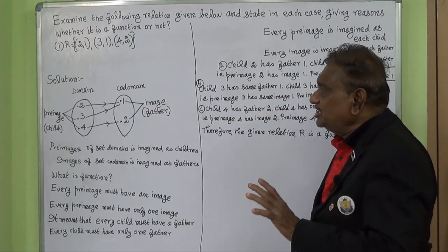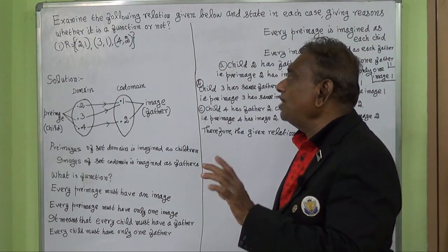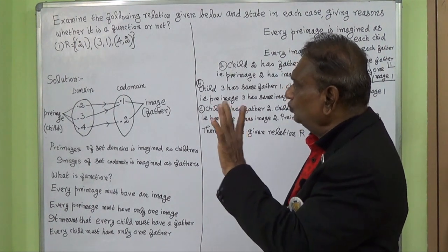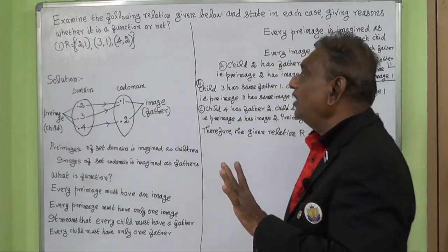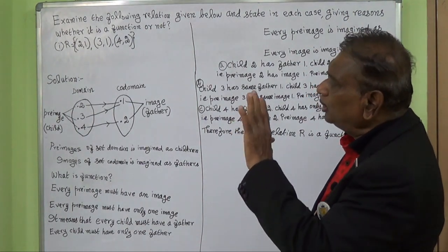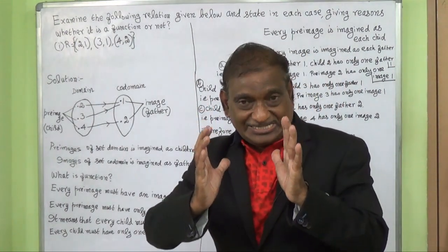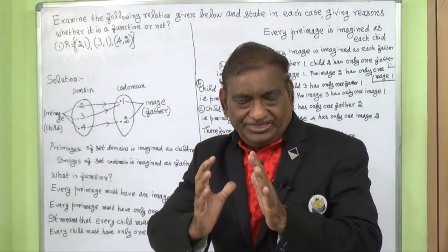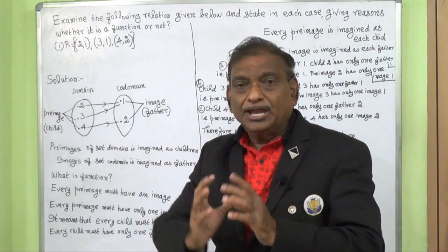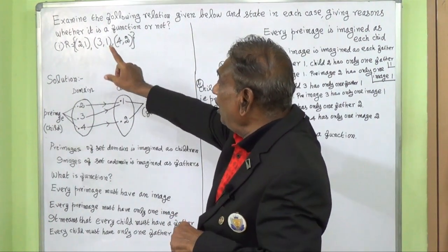The relation is given as the ordered pairs (2,1), (3,1), (4,2). There are 3 ordered pairs in this relation R.